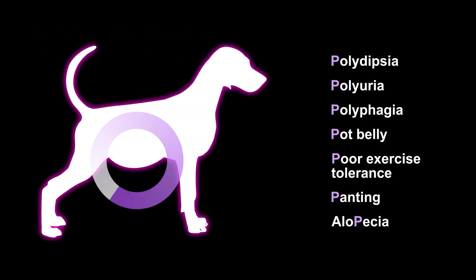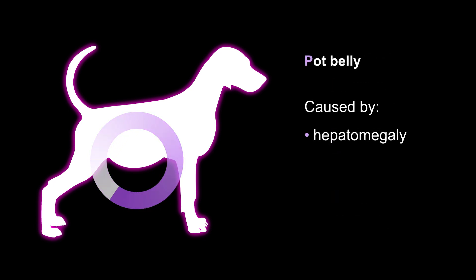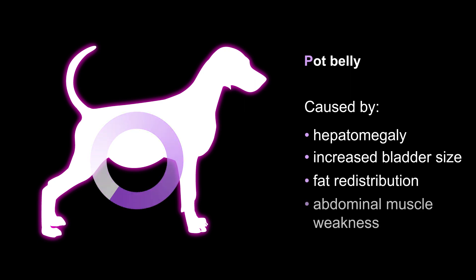Dogs with Cushing's disease can also develop a pot-bellied appearance. This may be caused by hepatomegaly, increased bladder size, fat redistribution, and abdominal muscle weakness.